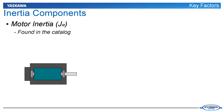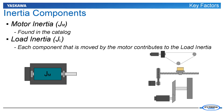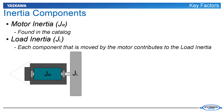The motor inertia, JM, is part of the design of the servomotor and is listed in the catalog. However, the load inertia, JL, often consists of many components. Each component that is moved by the motor contributes to the total load inertia. The total load inertia is found by using the proper equations for each component.